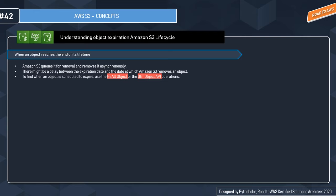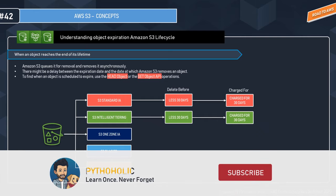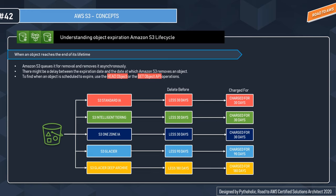For early deletion charges per storage class: if you delete an object from Standard IA, Intelligent Tiering, or One Zone IA before 30 days, you are charged for 30 days. If you delete from Glacier before 90 days, you are charged for 90 days. If you delete from Glacier Deep Archive before 180 days, you are charged for the full 180 days.